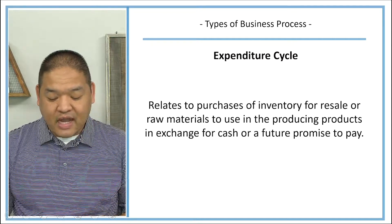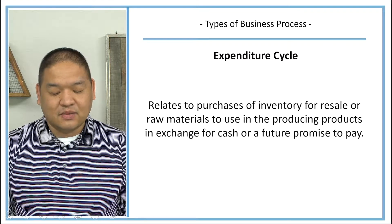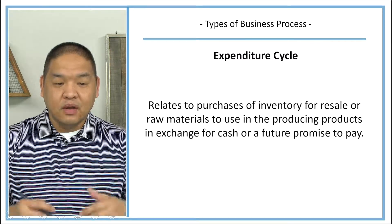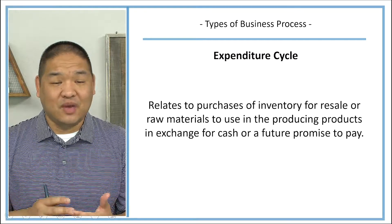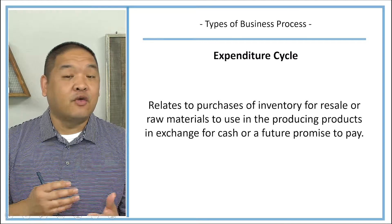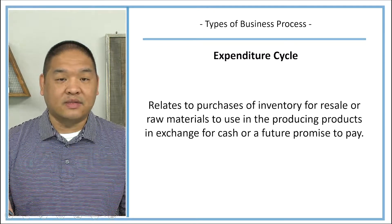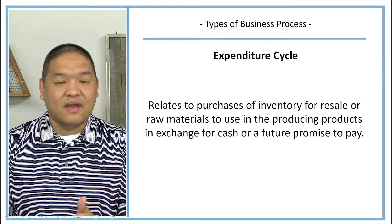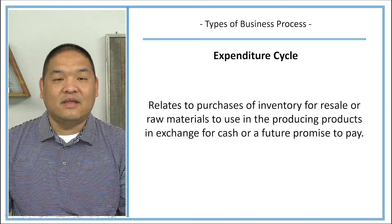The expenditure cycle relates to purchases of inventory for resale, or raw materials used in production, in exchange for cash or a future promise to pay. Generally speaking, most expenditures are going to be inventory-based. If we are a services company, those costs may not come out of this cycle — labor has its own cycle. But all expenditure-related activities are grouped here.